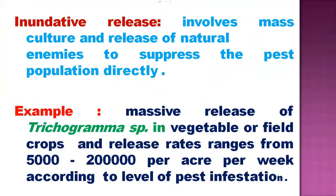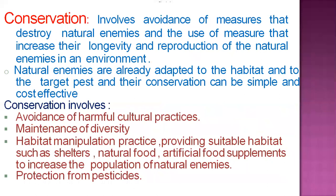Inundative release involves the mass culture, mass multiplication, and release of natural enemies when the pest population approaches a damaging level. Natural enemies are not expected to reproduce in this case; instead, control is achieved through the released individuals themselves. An example is the massive release of Trichogramma in vegetable fields at a rate of 5,000 to 2,00,000 per acre per week, depending on the level of pest infestation.